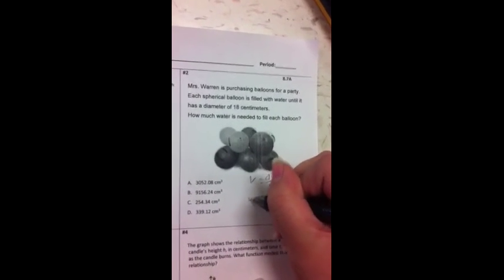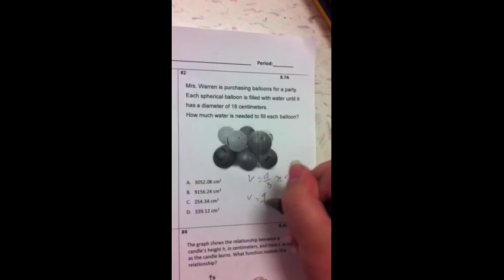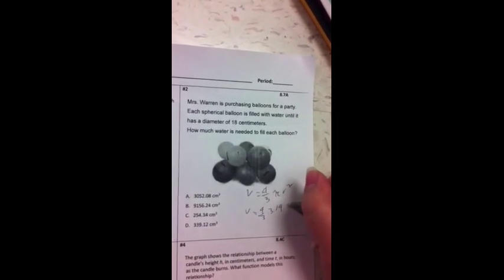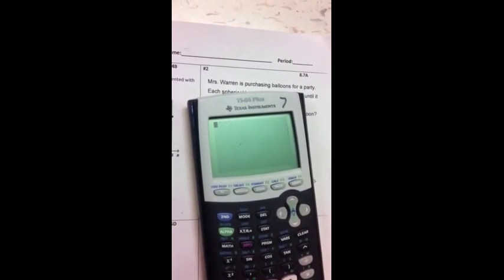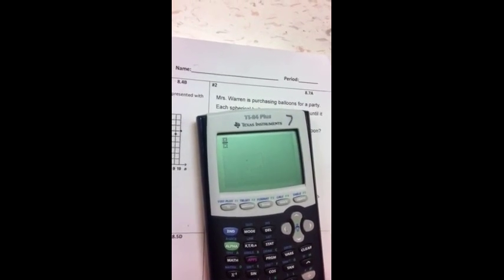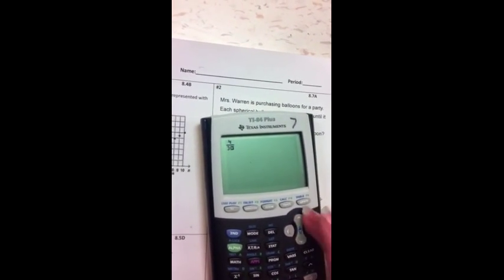We're going to rewrite that to be 4 over 3 and 3.14 times 9 squared. Then we're going to plug it into the calculator. So that's Y equals 4 over 3.